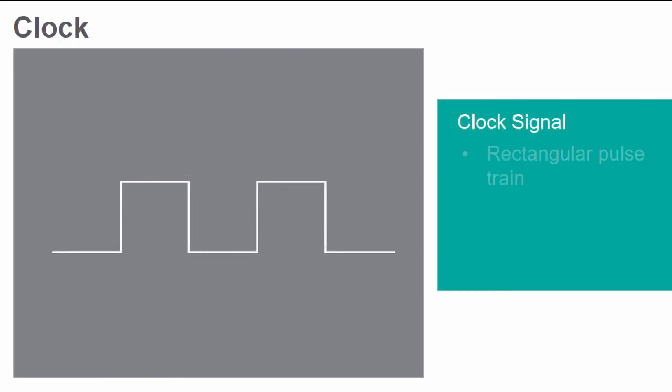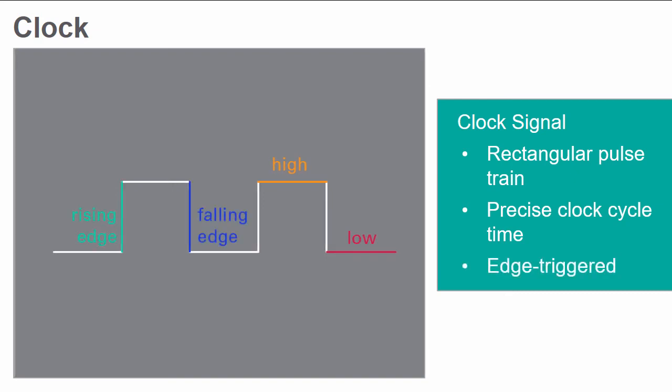The clock signal is a rectangular pulse train. It has precise pulse width and interval between pulses, called clock cycle time. Most sequential circuits change their state on one of the edges of the clock pulses, rising or falling edge, being referred to as edge-triggered.